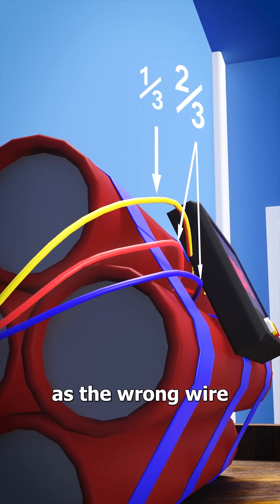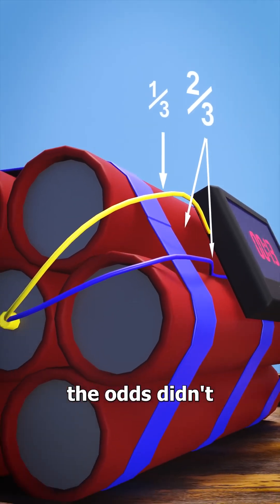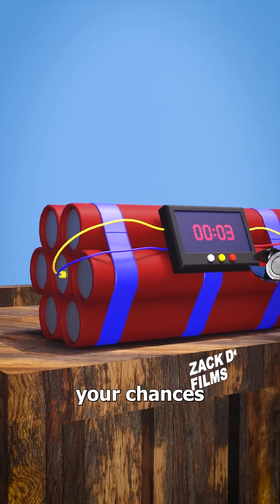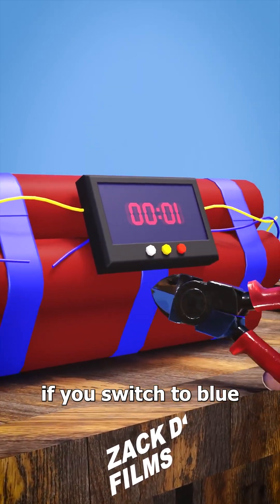And when red was identified as the wrong wire, the odds didn't actually change, they were just reflected onto the blue wire. Which means your chances are better if you switch to blue.